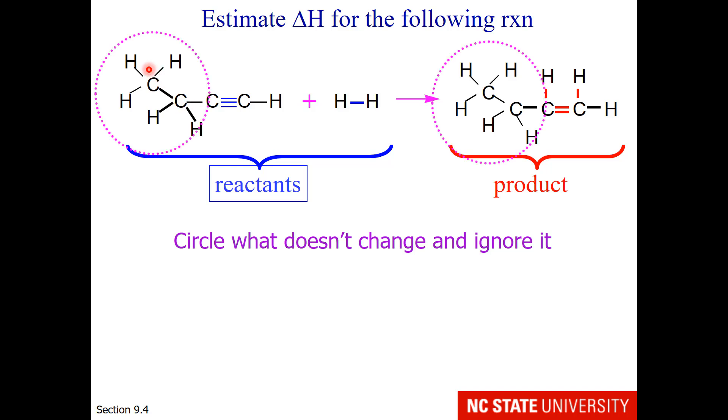This is known as an ethyl group, and hopefully you notice that it is on both the reactant side and the product side. This carbon-hydrogen bond is also on the product side. So when we think about what changes, we are going to break this carbon-carbon triple bond and this hydrogen-hydrogen bond, and we have two new bonds that form, a carbon-carbon double bond and two carbon-hydrogen bonds.